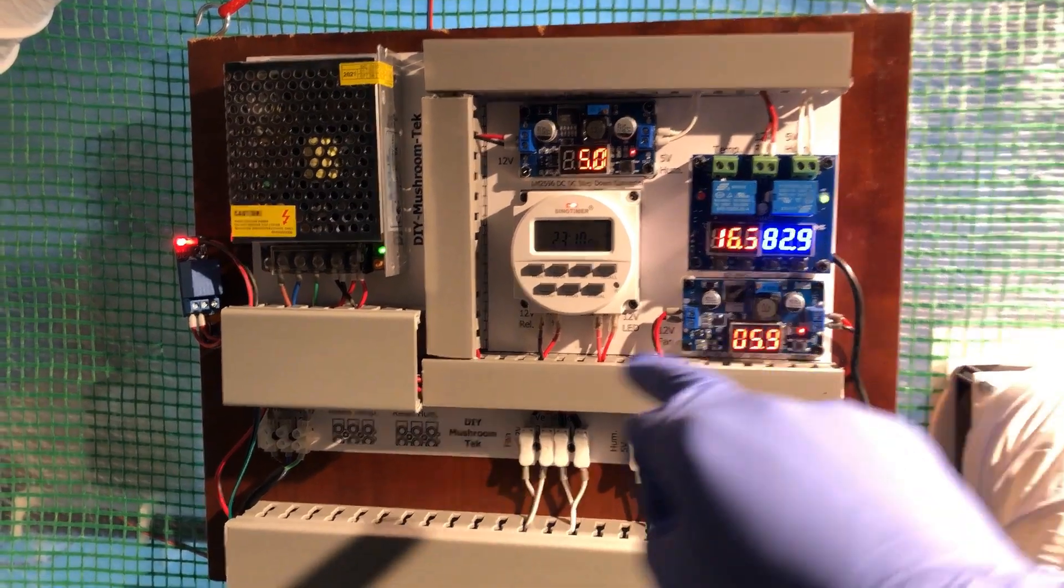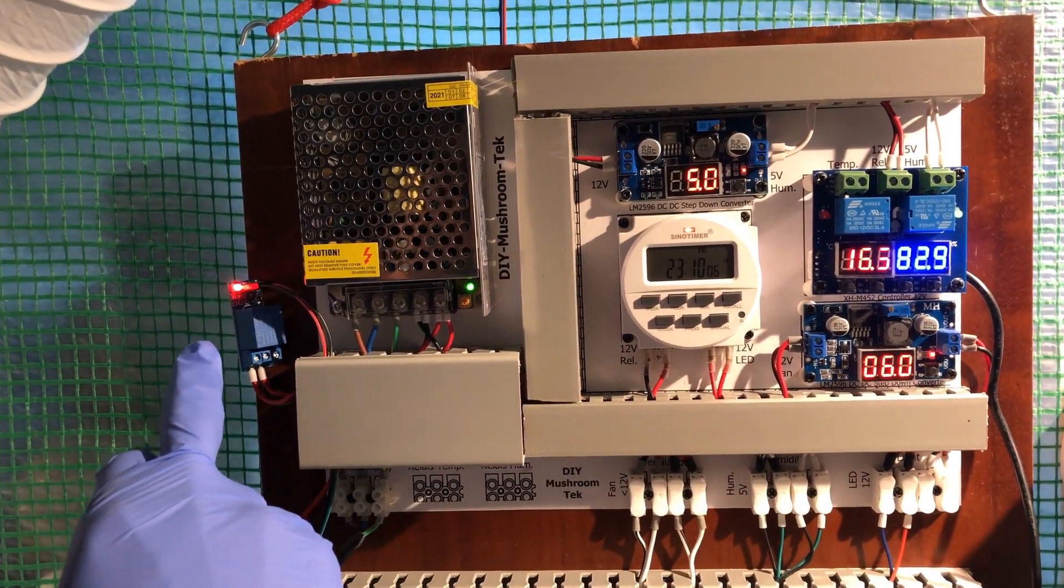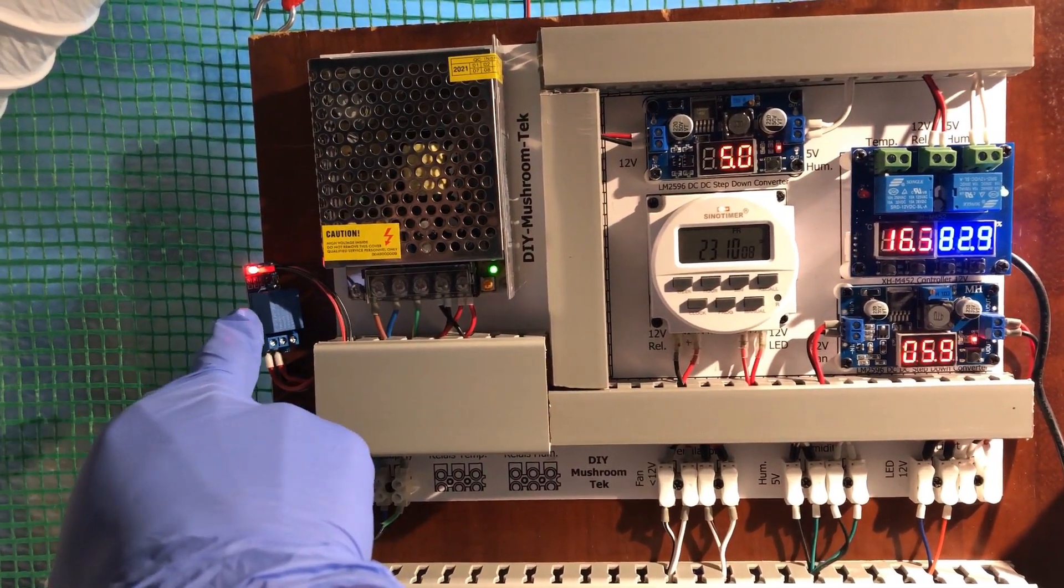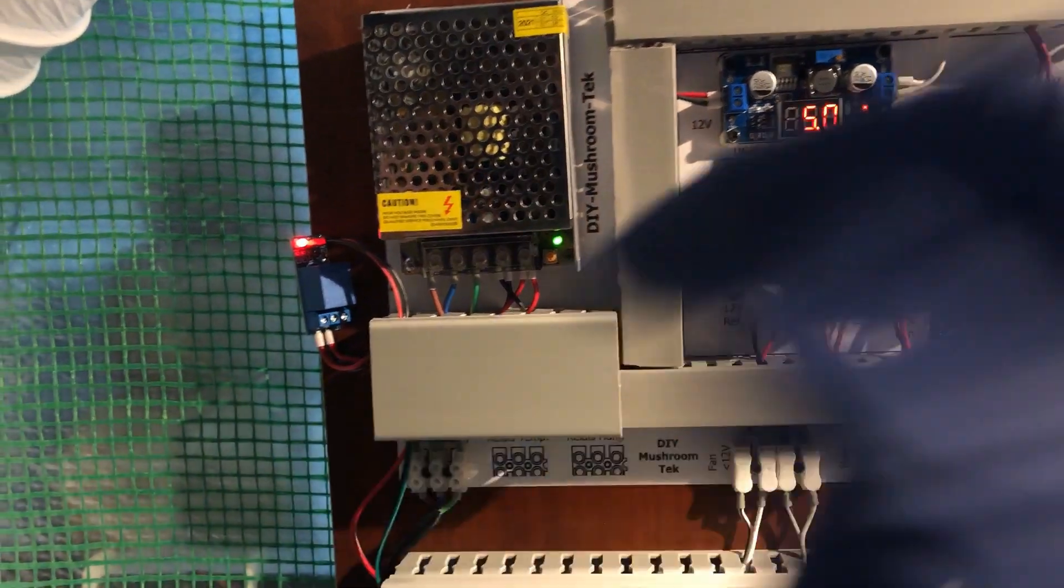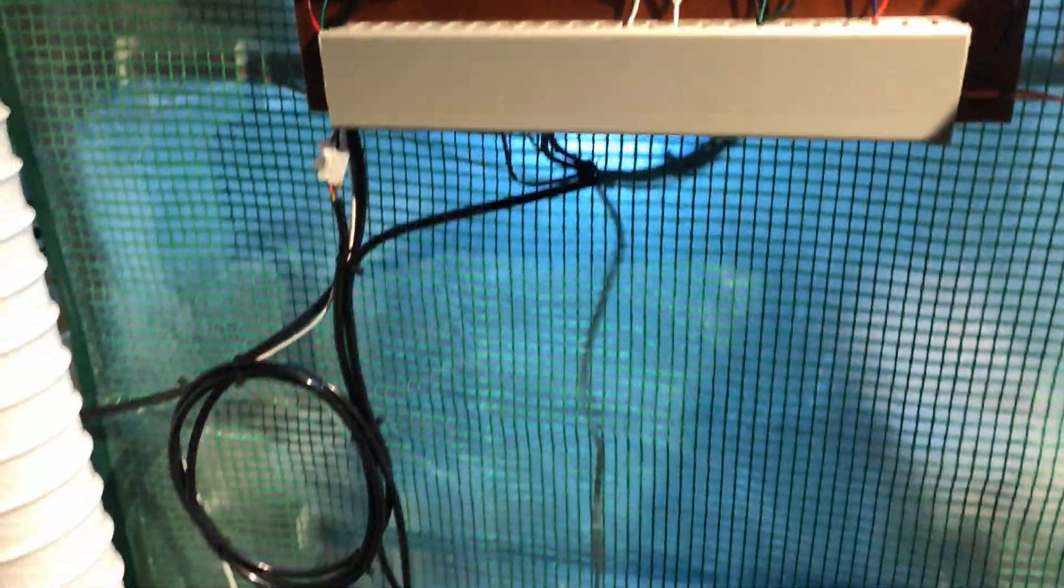Please note that the prototype relay on the left side will be replaced with one that can be mounted on the board. The entire system runs on 12 volts. You also see the filtered input air and on the left side the exhaust air.